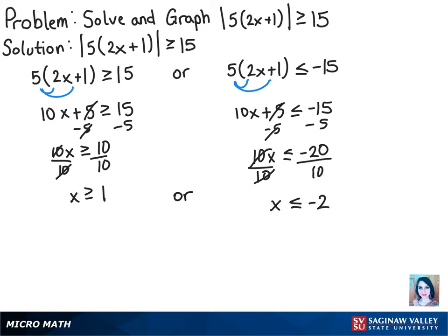Alright, so those are our two solutions. Now let's graph those. We can start by plotting negative 2 and positive 1. So as you can see, x is greater than or equal to 1, since that includes 1, we'll shade in that bubble there to show that we're including it.